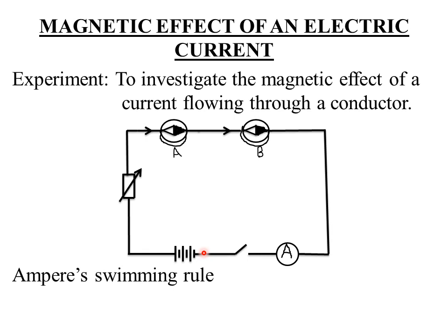Then repeat the experiment with the battery polarities reversed — reverse the connection of the positive terminal and the negative terminal. Remember, whenever you reverse the polarities of the battery, the direction of current flow will also be reversed.